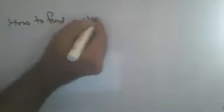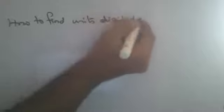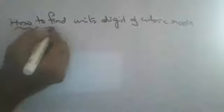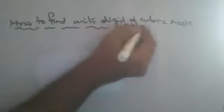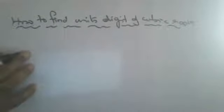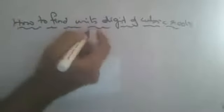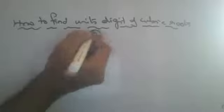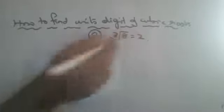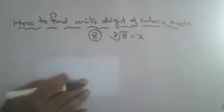Today's topic is how to find the units digit of cubic roots — a very easy topic. To understand this, we are dealing with perfect cubes only. For example, eight is a perfect cube because the cube root of eight is two.